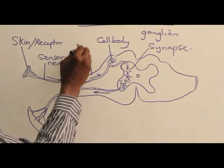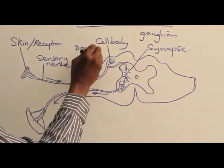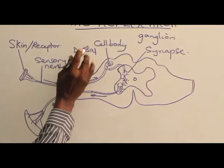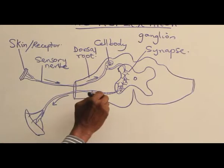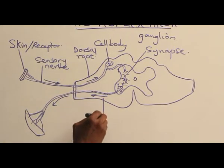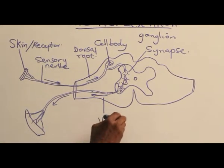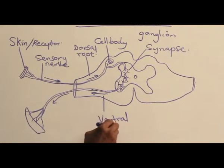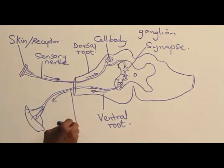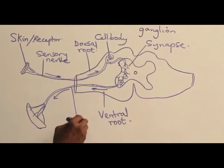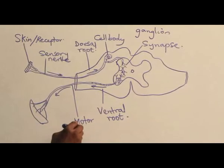This is dorsal root, while this side is ventral root, while this one is motor nerve.